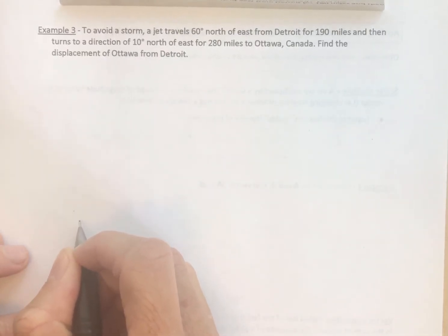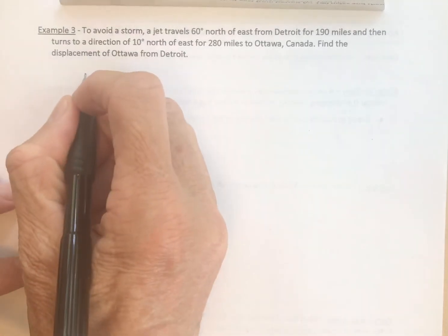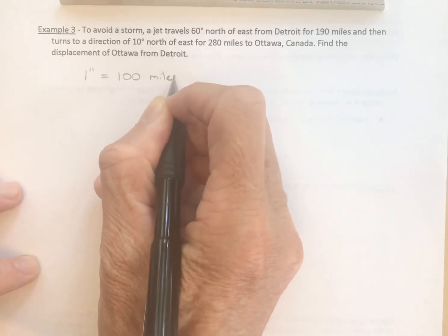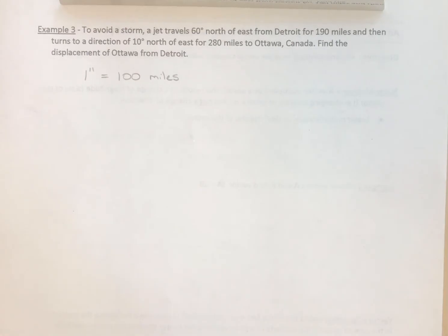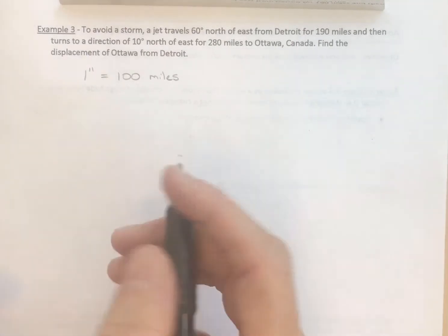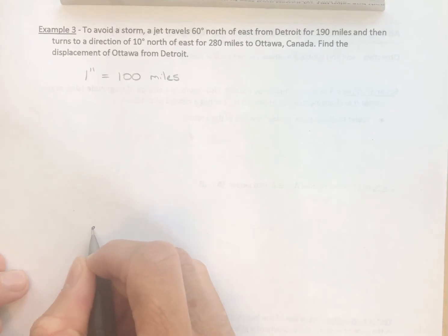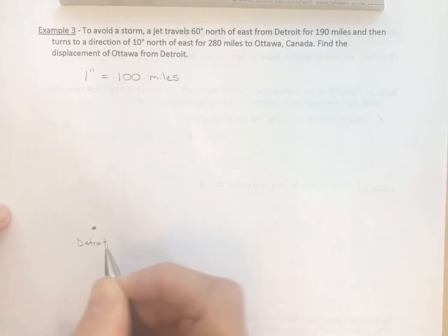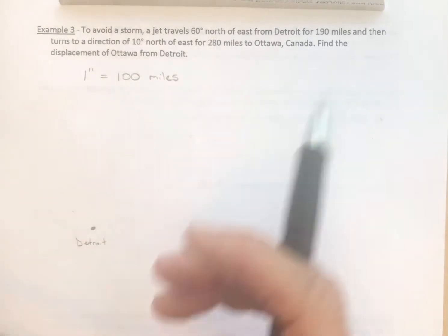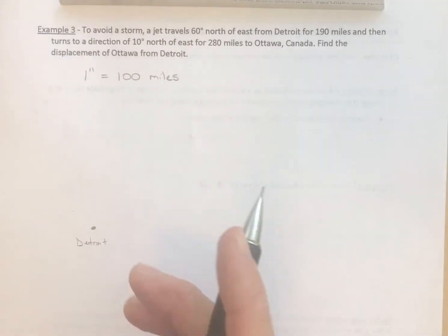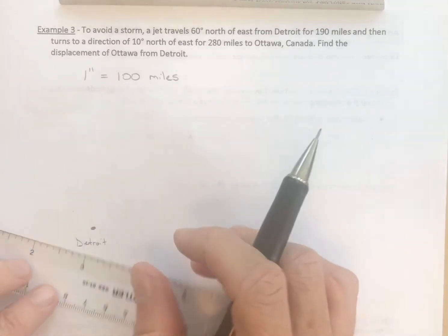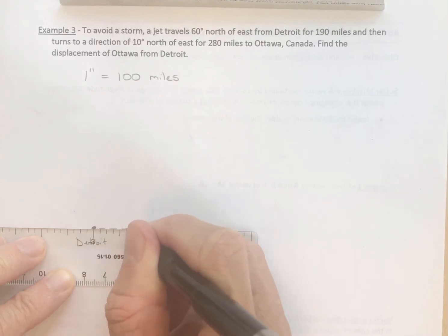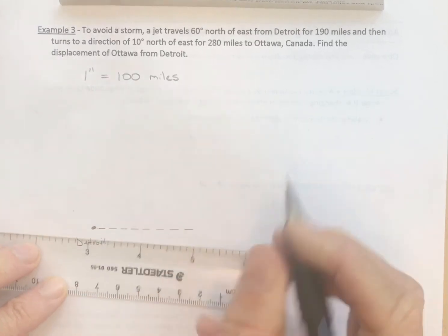I've already done this, so I know I want to start. Well, let's first off do this. Let's have one inch equal 100 miles. And you can probably already tell that the precision is going to be a bit lacking. We're going to get a general idea. So here is Detroit. Now, 60 degrees north of east. I'll just kind of do a dotted line. This is east.